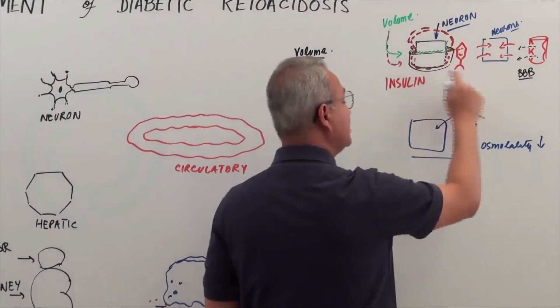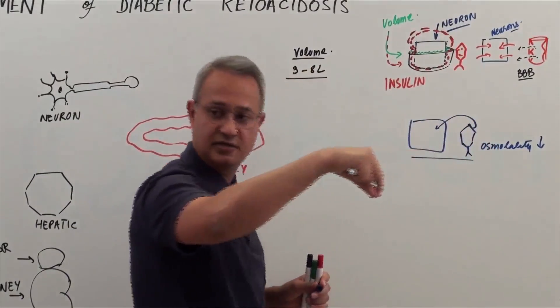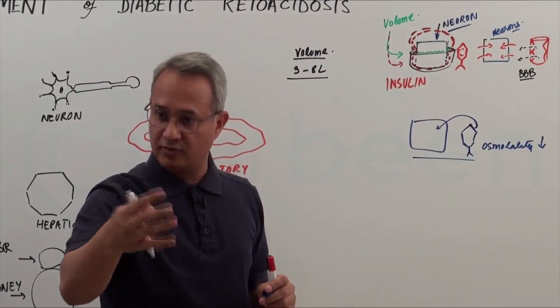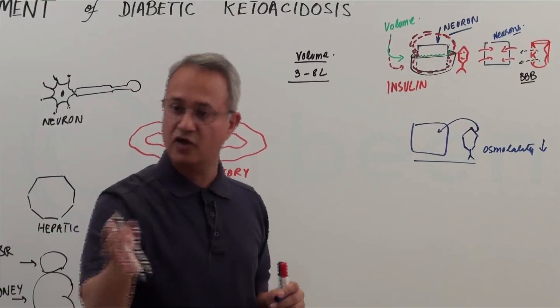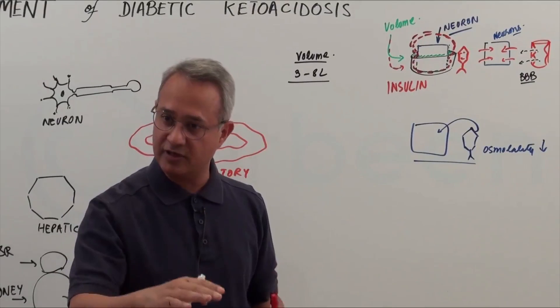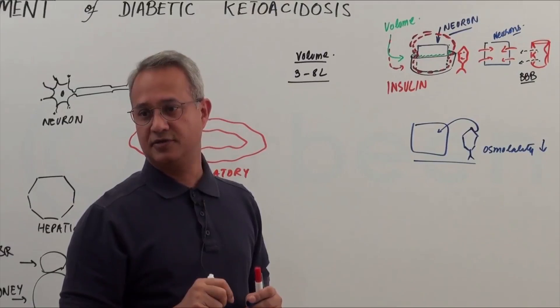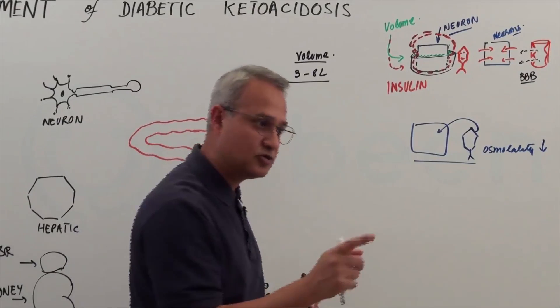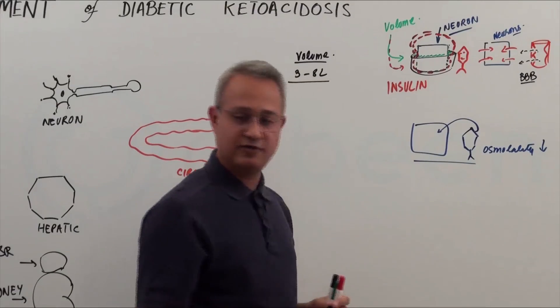So brain's tissue that are glucose dependent will become swollen because of glucose movement and neurons that are not glucose dependent will swell because of a universal drop in osmolality. And why did the universal drop in osmolality occur? Because of insulin.